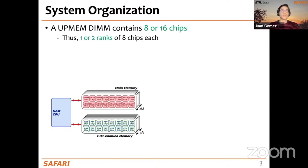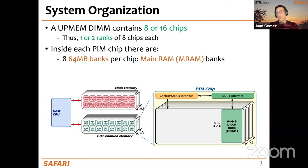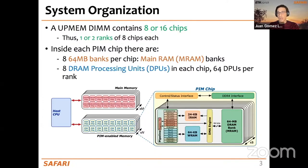If we take a closer look at the system, we identify the UPMEM DIMMs that coexist with main memory DIMMs — conventional DRAM typically. In each of the DIMMs we have eight or 16 chips representing one or two ranks of eight chips each. Inside each PIM chip there are eight DRAM banks called MRAM of size 64 megabytes, and then there are eight DRAM Processing Units or DPUs.